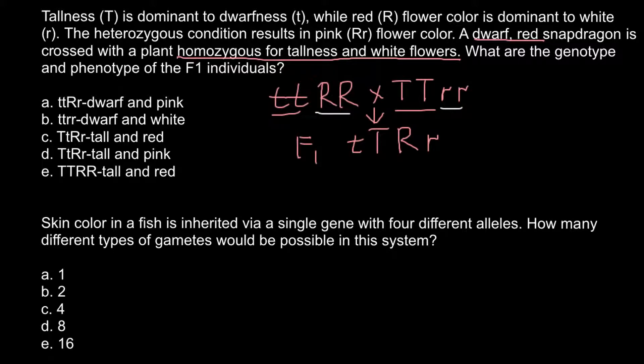We can also tell that this is going to be a tall plant and it's going to be pink color. Now let's find which answer would meet our answer. Answer A, dwarf and pink, we can cross out this answer. Answer B, dwarf and white. Answer C, tall and red.